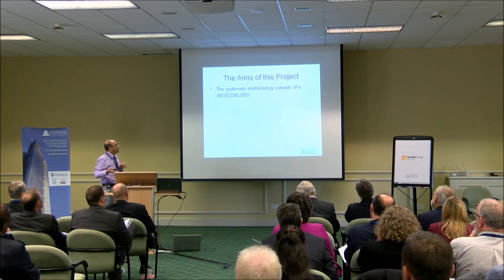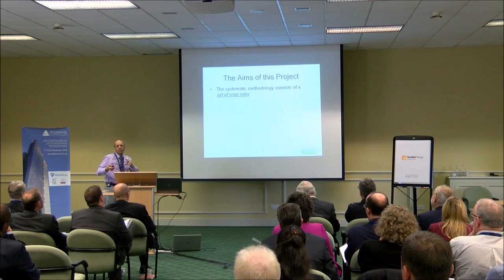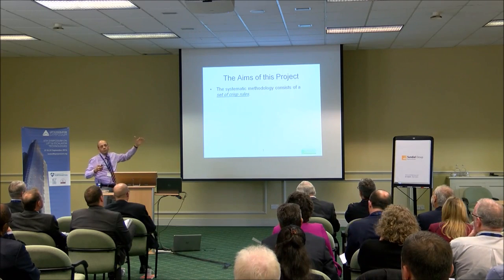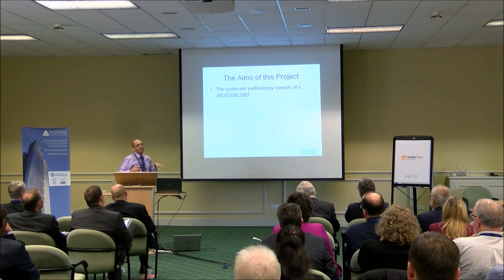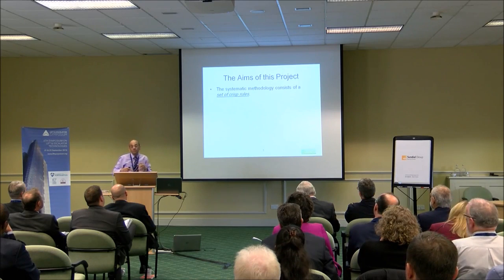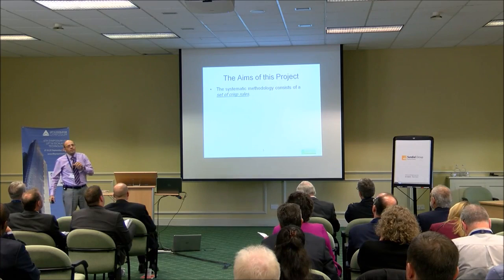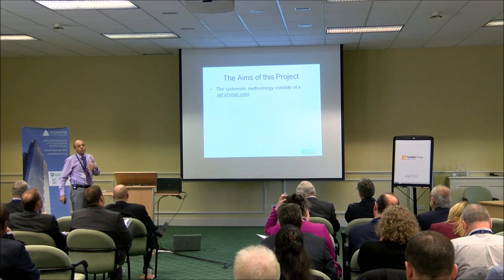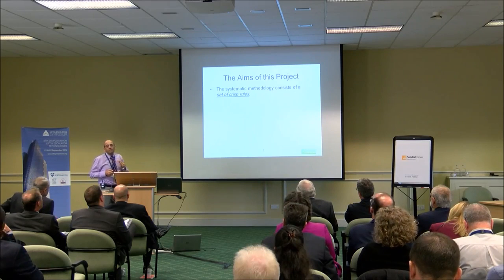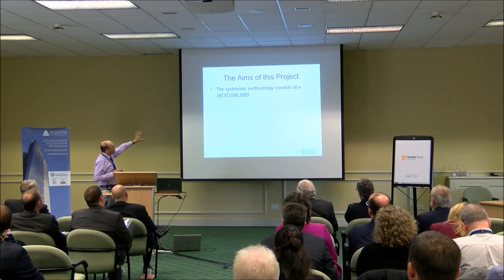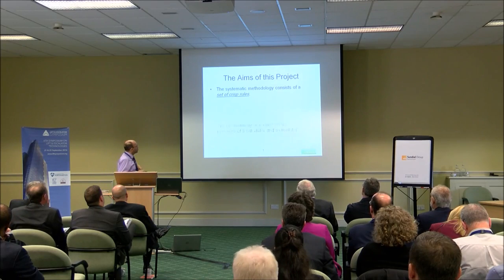We need a set of rules — I'm calling them crisp to distinguish them from fuzzy. All of the rules I'm going to show you today are crisp rules: if A is more than B, if A is less than B. Admittedly, that's not exactly how experts think — they think in terms of 'much larger,' 'much smaller,' 'nearly the same.' Those are the sort of things fuzzy thinking involves. We're looking at crisp rules at this stage.